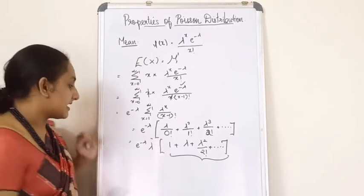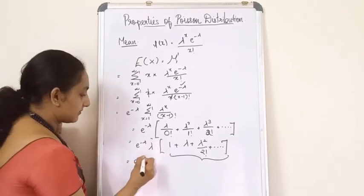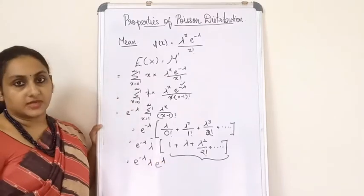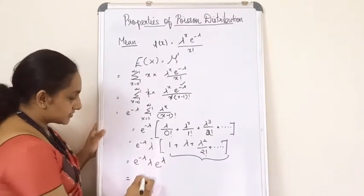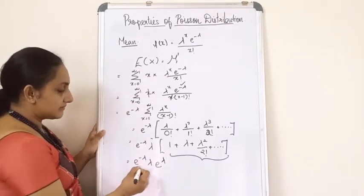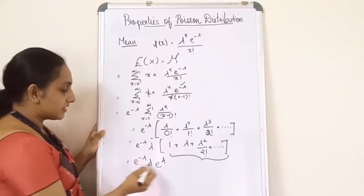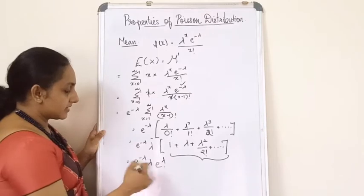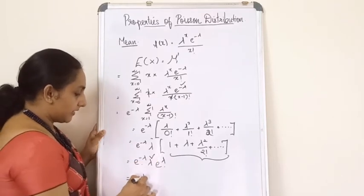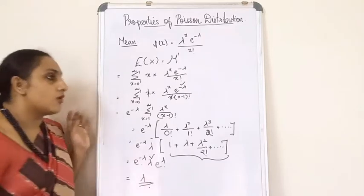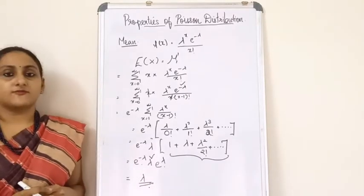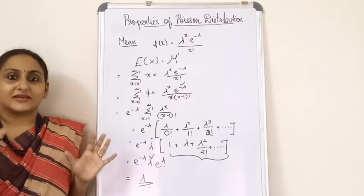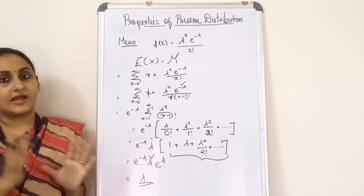This series 1 + λ + λ²/2! + … is nothing but e^λ. So we have e^(−λ) · λ · e^λ. The e^(−λ) and e^λ cancel out, and the result is λ. Therefore, the mean of a Poisson distribution is its parameter λ.